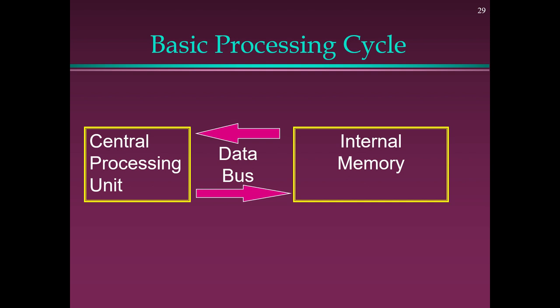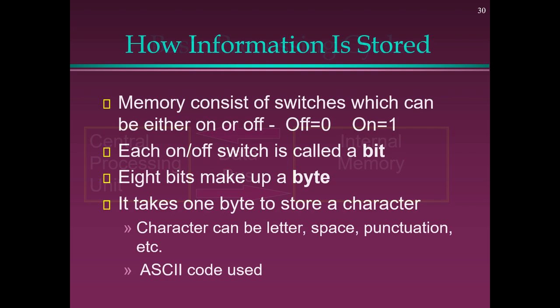Basic Processing Cycle: Central processing unit, data bus, and internal memory. Memory consists of switches which can be either on (1) or off (0). Each on/off switch is called a bit. Eight bits make up a byte, and it takes one byte to store a character — which can be a letter, space, punctuation, etc. ASCII code is used.